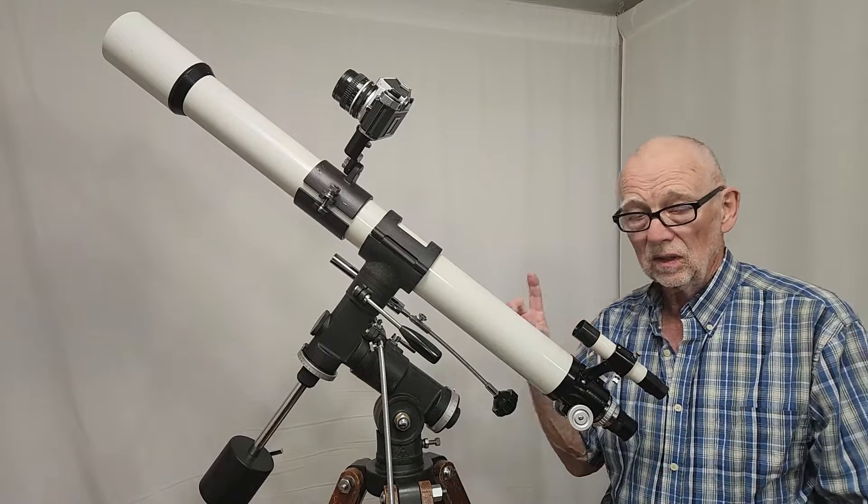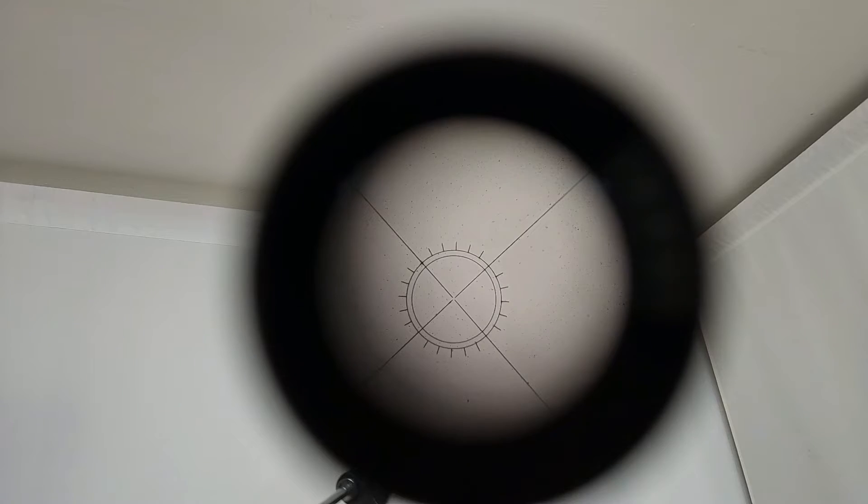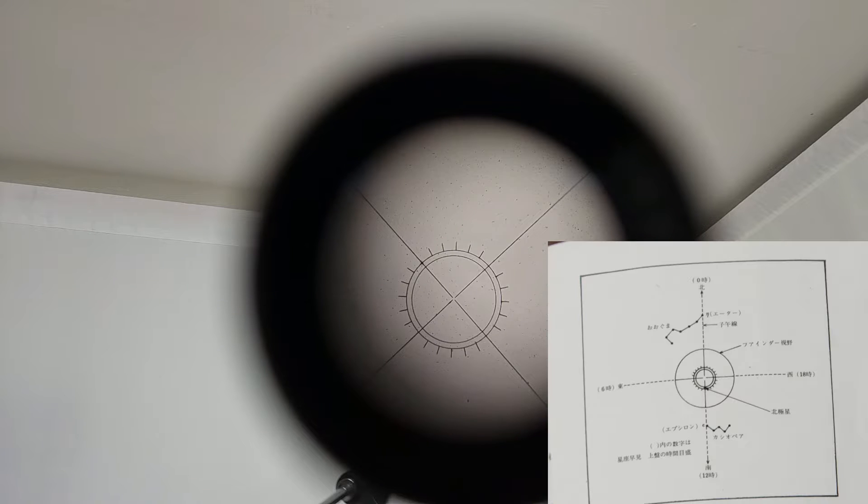You could do piggyback astrophotography pretty easily because you could polar align this thing quite well using the finder. Let me show you. This is what it looks like through the finder on the TS-65 D-type. You can see that the reticle there is designed to be a polar axis finder. With some instructions, you can polar align the scope very closely. You get really good photographic results.